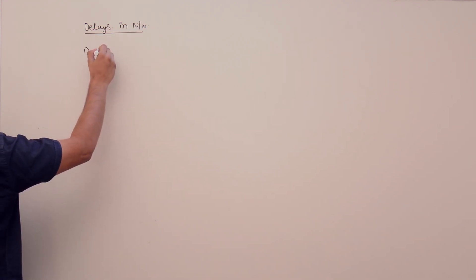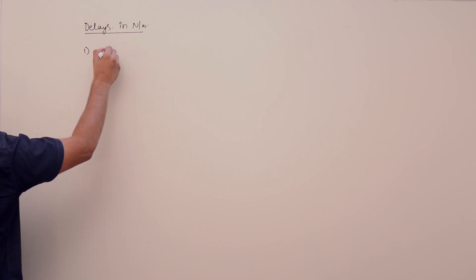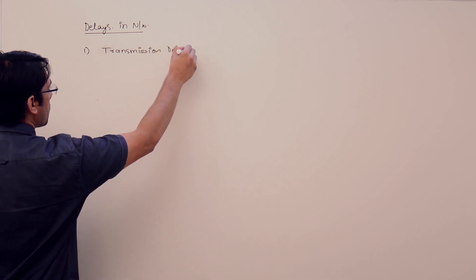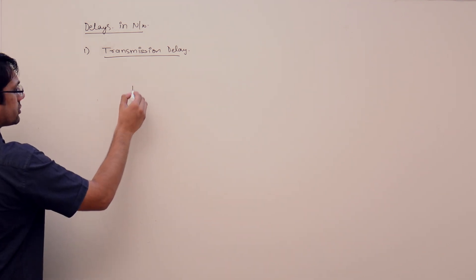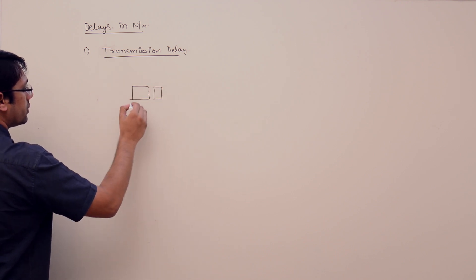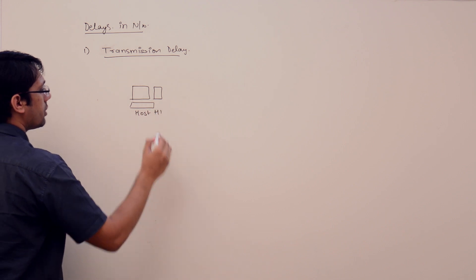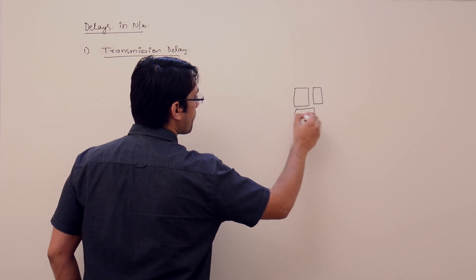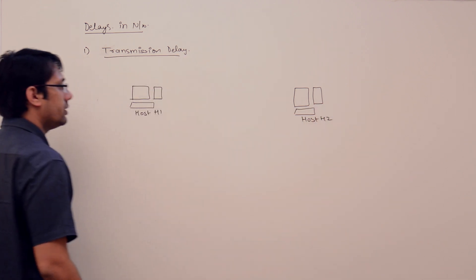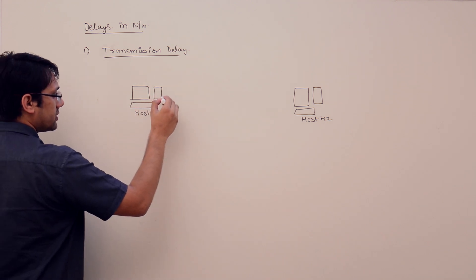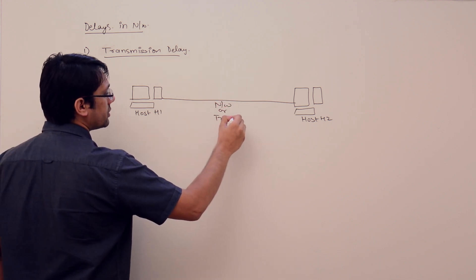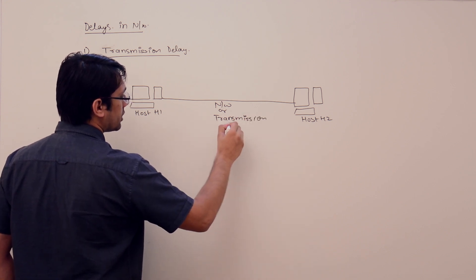The first kind of delay will be called as the transmission delay. What is transmission delay? Assume this is one host — host H1. This is the second host, host H2, and they have a transmission media, or you can say a transmission link, between them.